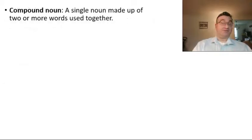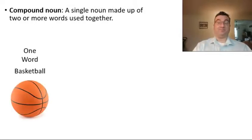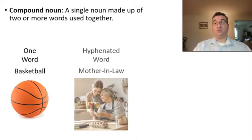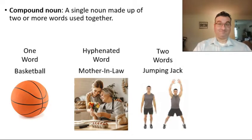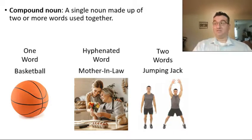Compound nouns are single nouns made up of two or more words put together. So you could see basketball — we took two words and put them into one word. Or we use hyphens for words like mother-in-law, three words put together into one. Sometimes we keep them separate, but it works as one noun, such as the exercise jumping jack.